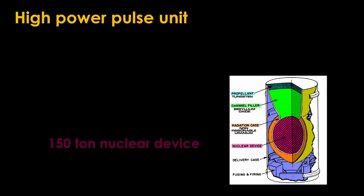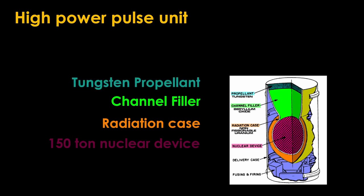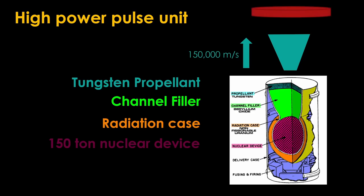We start with a very small nuclear device, only 150 tons of yield. We surround the device with a radiation case made from uranium-238, otherwise known as non-fissionable uranium. The purpose of the case is to take the x-rays that are created by the nuclear explosion and channel them upwards. Above that, we have the channel filler made from beryllium oxide. It will absorb the x-rays and convert them to heat. And finally at the top, there's a disk of tungsten. The immense heat melts the tungsten and generates a big spray of extremely high velocity tungsten traveling upwards at speeds in excess of 150,000 meters per second, aimed directly at the pusher plate on the bottom of the vehicle.